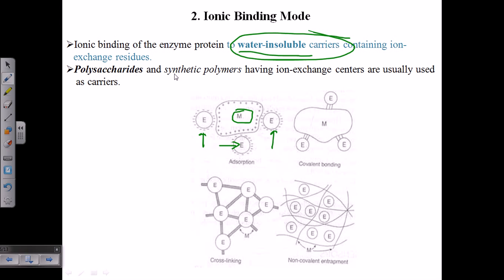The matrices used in ionic binding can be prepared from inorganic or organic materials. They are mostly made up of polysaccharide residues or synthetic polymers. Natural polysaccharides include cellulose and starch, while synthetic polysaccharides include polystyrene-type residues.